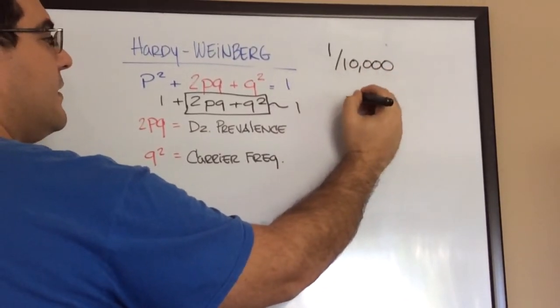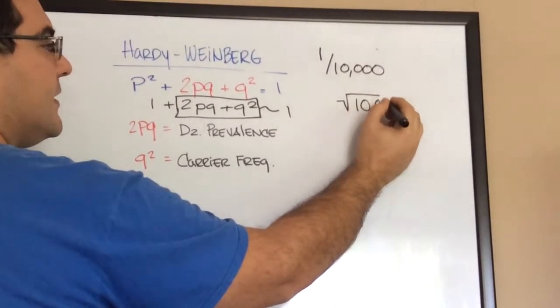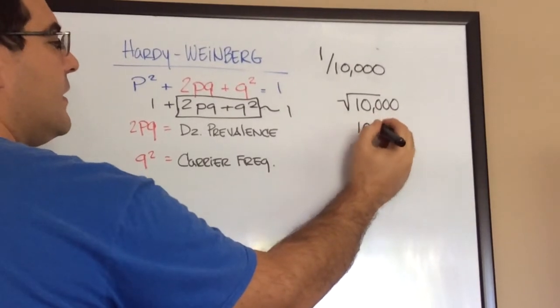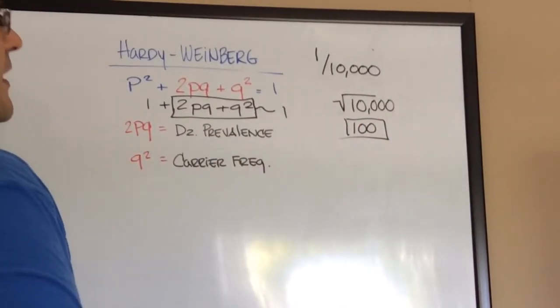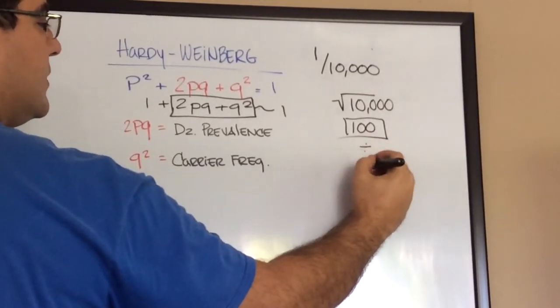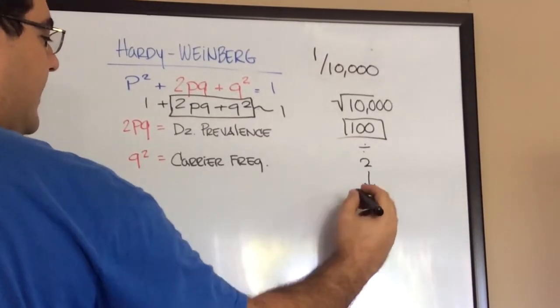That should give you 100, or will give you 100. Then you divide 100 by 2, and that gives you 50. And there you have it.